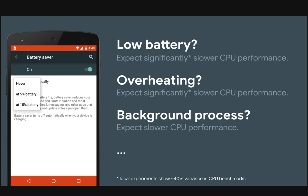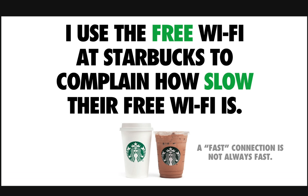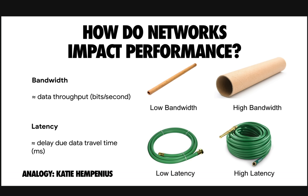There are other factors on phones, desktops, and laptops worth keeping in mind. Low battery can slow down your CPU performance. Overheating can slow down your CPU performance. And background processes can also impact this. Let's talk about optimizing for the network, because network latency and bandwidth can impact how soon things get over the wire. A fast connection does not mean it's always reliably fast — networks are complex.